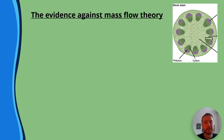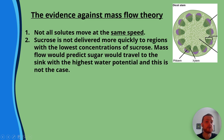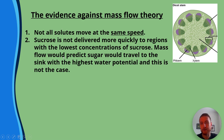Some evidence against mass flow theory: number one, not all solutes move at the same speed. Sucrose is not delivered more quickly to regions with the lowest concentrations of sucrose. Mass flow would predict sugar would travel to the sink with the highest water potential, and this just isn't the case.